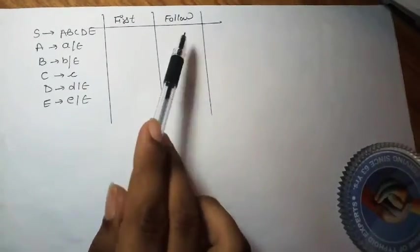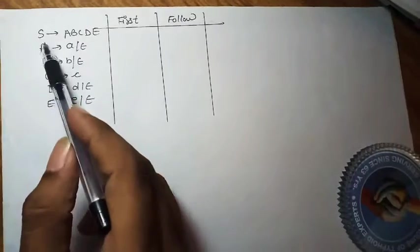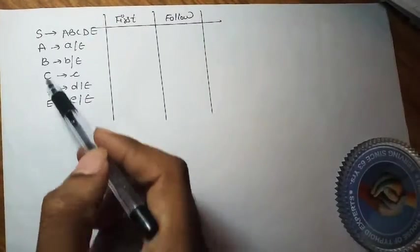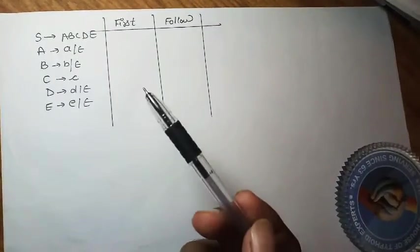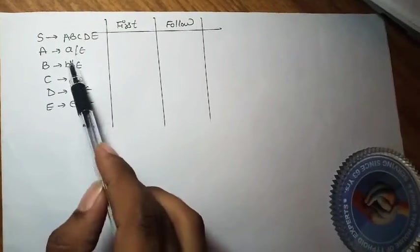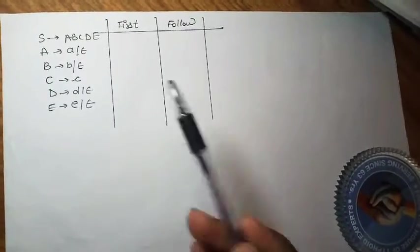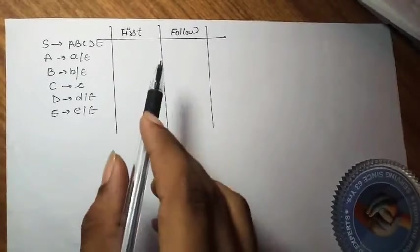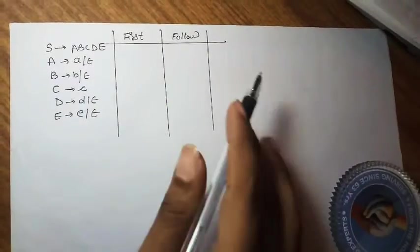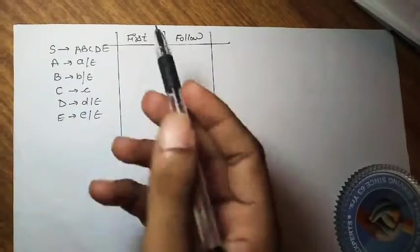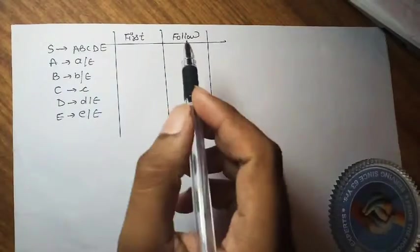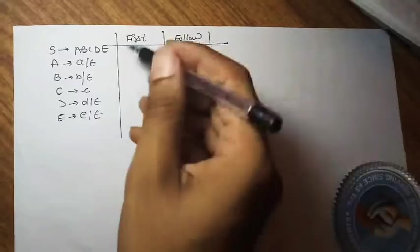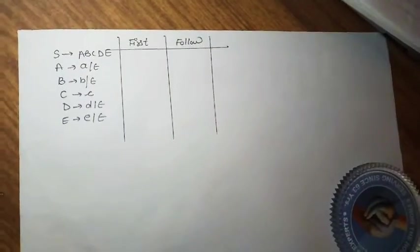Today we will learn how to find FIRST and FOLLOW for a compiler design problem. We have S as the start symbol; A, B, C, D, E are the non-terminals; and small a, small b, small c, d, e, and epsilon are the terminals. We should first find the FIRST of all these symbols and then find the FOLLOW using the FIRST.